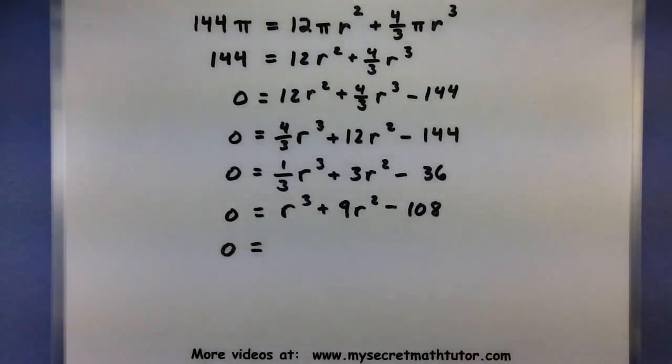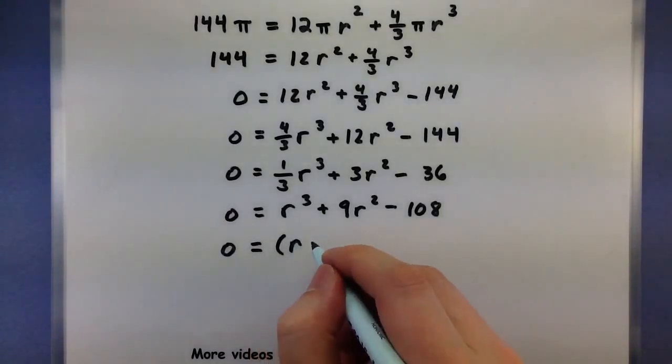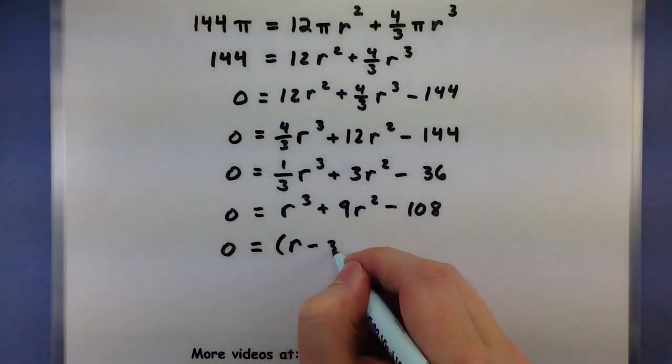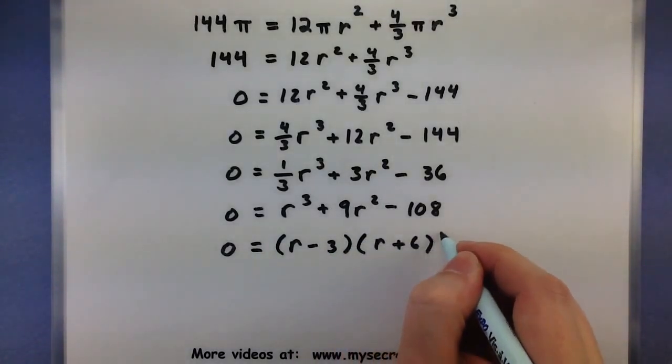Now for this particular polynomial, I've already done it. Let's go ahead and jump to what the factors look like. So r minus 3 and r plus 6 squared.